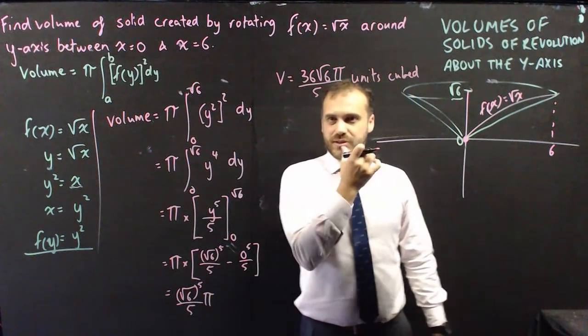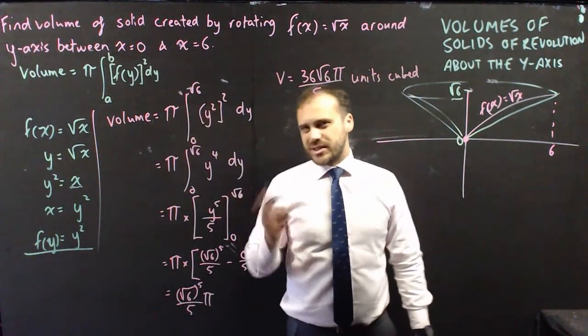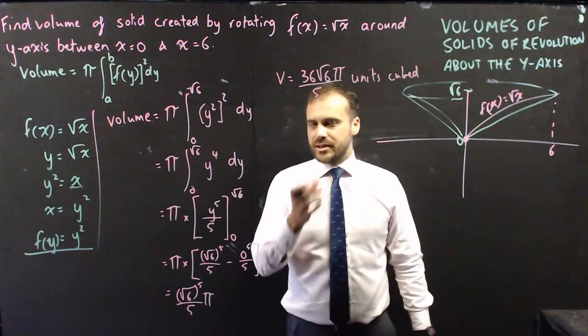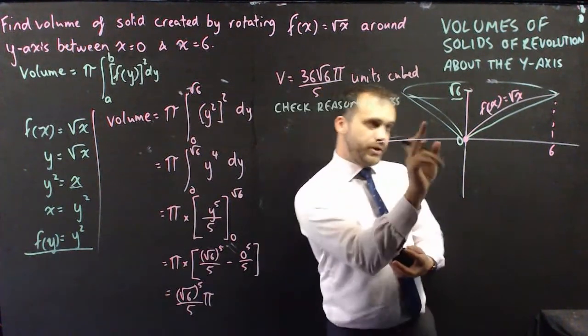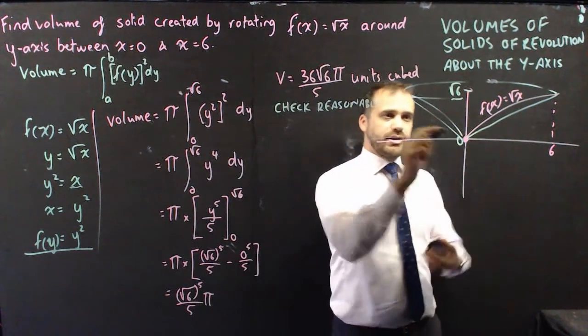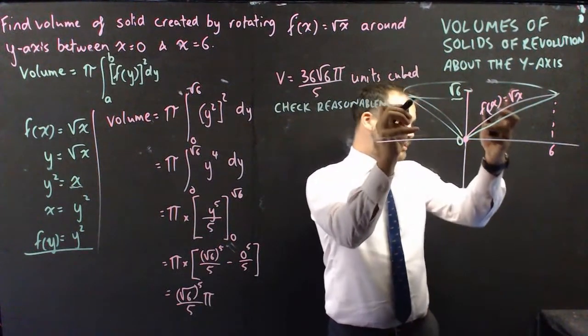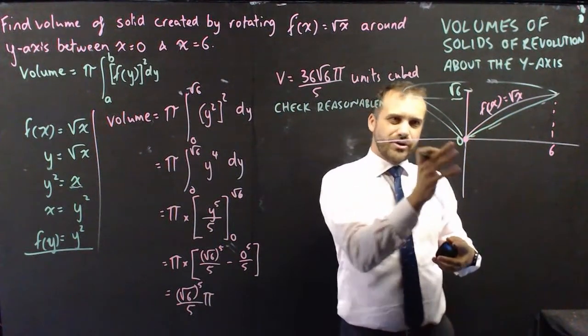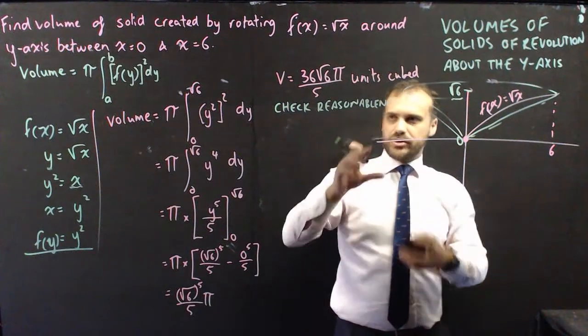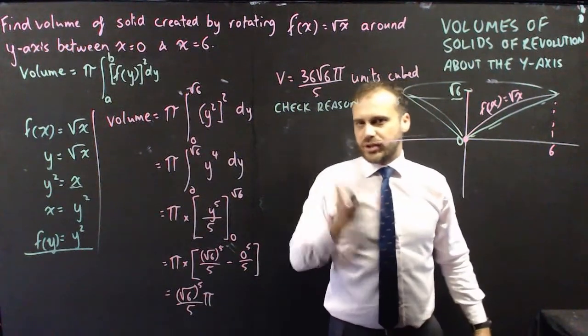And now you might be thinking to yourself, well, I've done a lot of calculations here, maybe I've made a mistake. You can check the reasonableness pretty well with this, because your volume of solid of revolution is this little trumpet shape here, but if we draw in this straight green line that I've already drawn in, well, that's a cone. That's just an upside down cone, and we know how to find the volume of the cone.